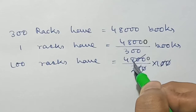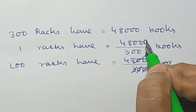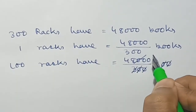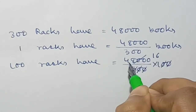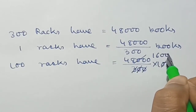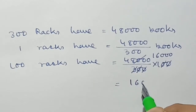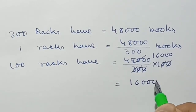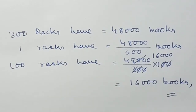We cancel 48,000 with 3: 3 into 16 equals 48, so we get 16,000. Therefore, 100 racks have 16,000 books.